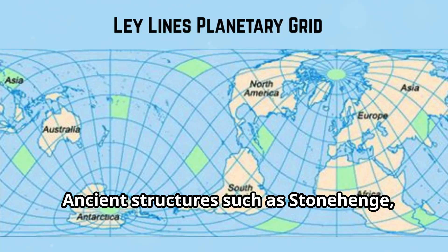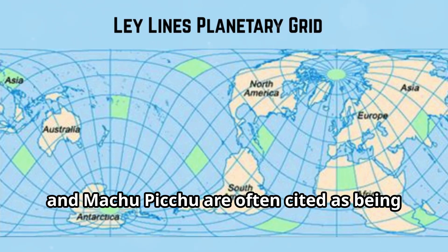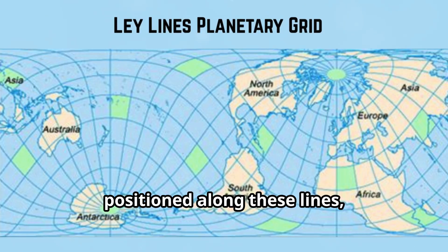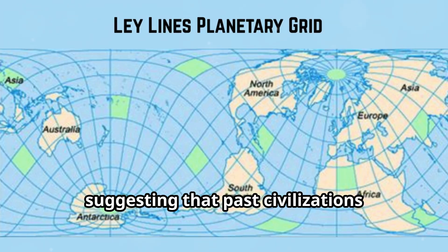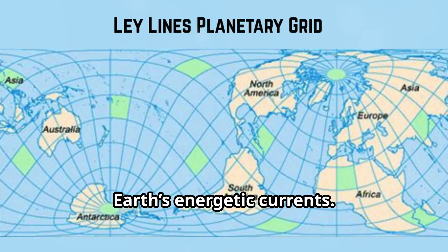Ancient structures such as Stonehenge, the pyramids of Giza, and Machu Picchu, are often cited as being positioned along these lines, suggesting that past civilizations intentionally aligned monuments with Earth's energetic currents.